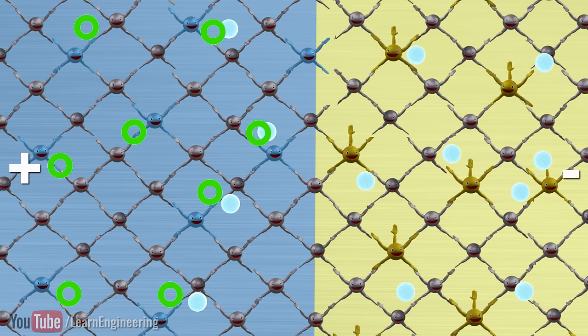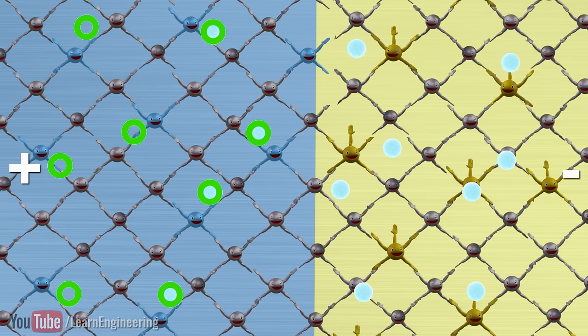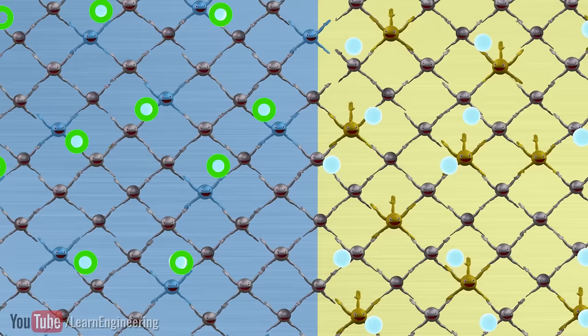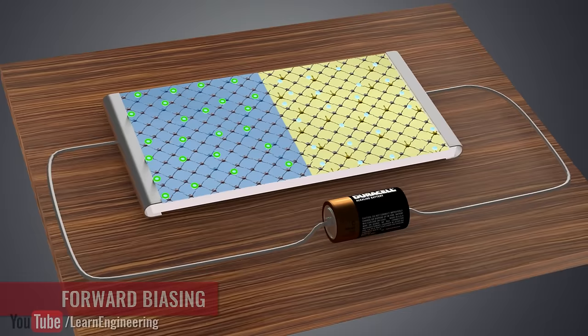But due to the attraction of the positive terminal, these electrons can now jump to the holes nearby in the p-region and flow through the external circuit. This is known as the forward biasing of a diode. Just keep this simple principle of a diode in mind. You will understand the operation of a transistor very easily.